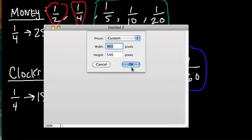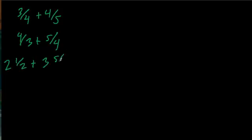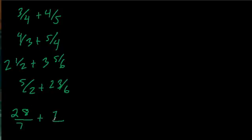Let's look at some strings and then think about which model might actually work really well. I'm going to open a new window. I'm going to write out the string as I talk through it. Here we have three fourths plus four fifths, then four thirds plus five fourths, then two and one half plus three and five sixths, five over two plus twenty-three over six, and twenty-eight over seven plus seven over twenty-eight.